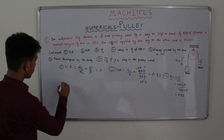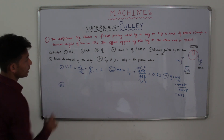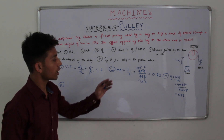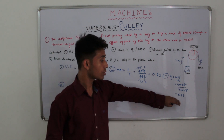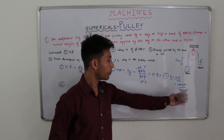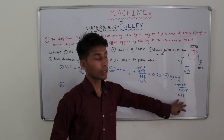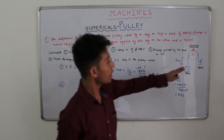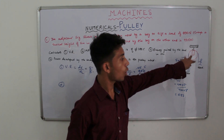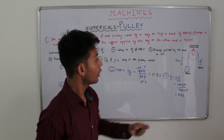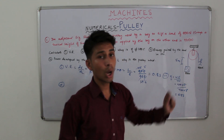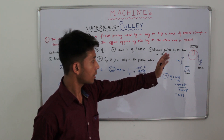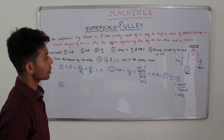Then we move on to the fourth part — why is efficiency of the machine not 100 percent? We found efficiency is 0.83, or 83 percent. The answer is that it is because the pulley has got its own weight. Moreover, the string used is not perfectly elastic. So these are the reasons why the efficiency is not equal to 100 percent.